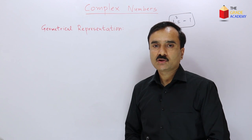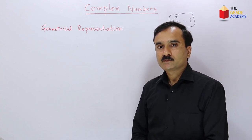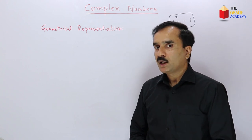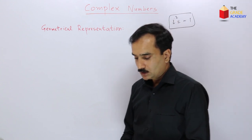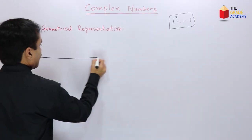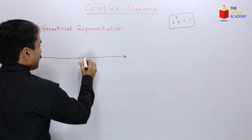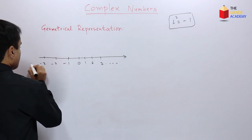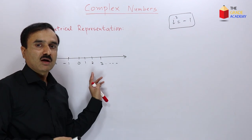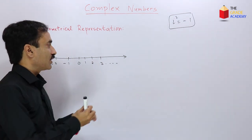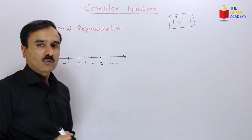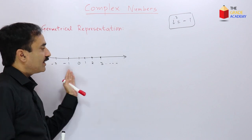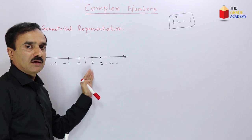Now we are going to give a geometrical interpretation of complex numbers. As we discussed previously, real numbers can be geometrically represented by a one-dimensional diagram called a number line, with zero in the middle, positive numbers on the right and negative numbers to the left. Every real number can be represented by a point on the number line, so the set of real numbers is a one-dimensional system.